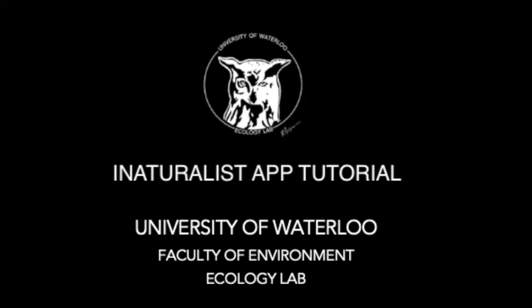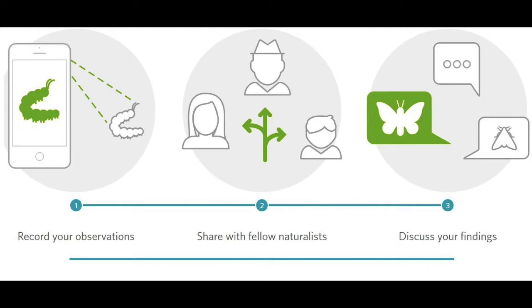Hello everyone! Today we will be going over how to work the iNaturalist app and how to input and view observations. iNaturalist is an app that helps you identify plants and animals around you. It is a citizen science project where an online social network of naturalists, citizen scientists, and biologists identify and share their own observations, as well as comment on and discuss other people's observations.